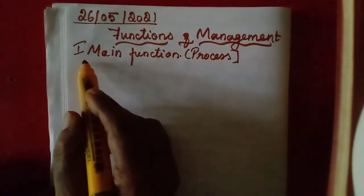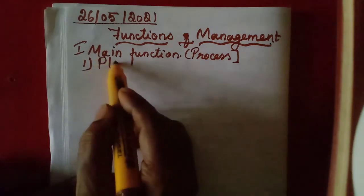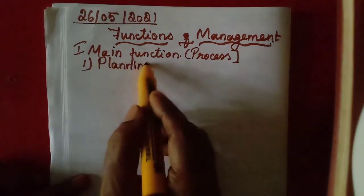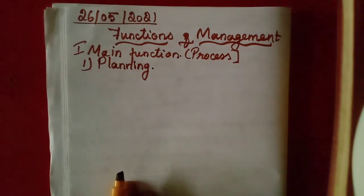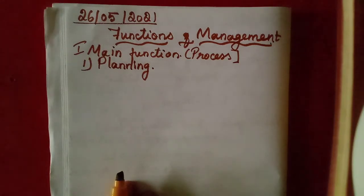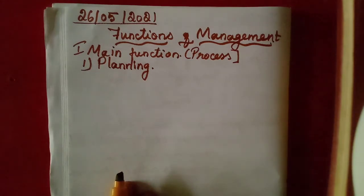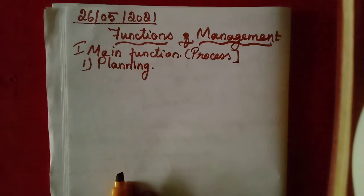The first main function is planning. Even our National Labour Planning Commission is there. In order to perform that political function, they have to plan. You know that budget — that financial planning is called budget. How much they have allocated for farming, that means for agriculture, then for defense. For each department, they will allocate the amount to be spent. So, that planning is very, very essential — that is the first and foremost function of management.